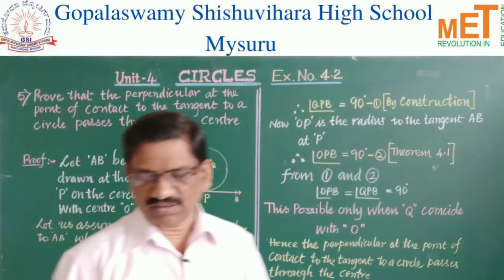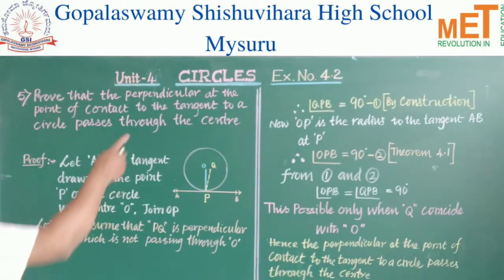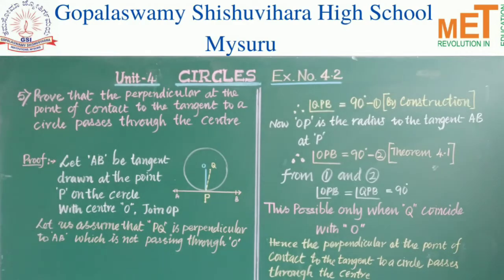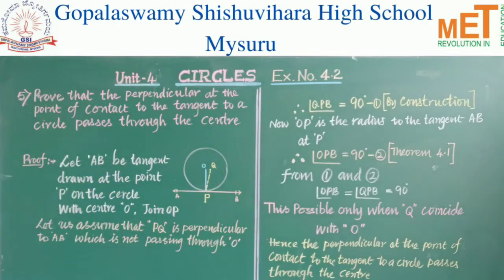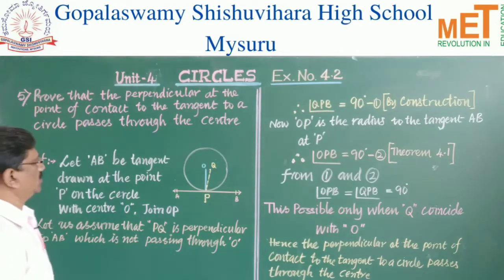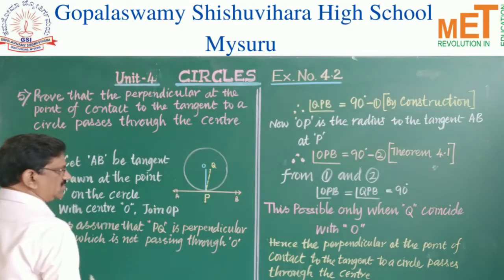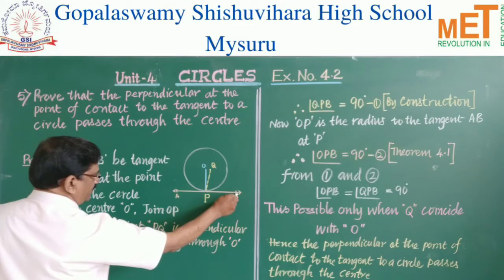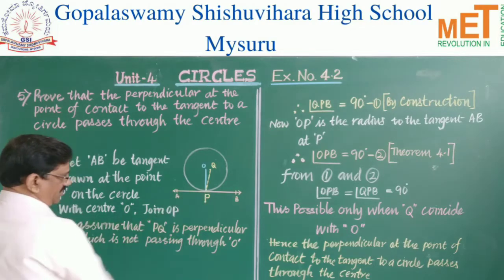Now children, we shall take the next sum, the fifth problem in Exercise 4.2. It says: prove that the perpendicular at the point of contact to the tangent to a circle passes through the center. Here we have drawn a circle with center O, and tangent AB is touching the circle at P.